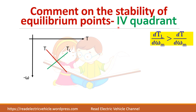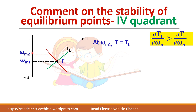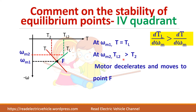In the fourth quadrant, at operating point F where T equals TL at omega-m1, increase the speed toward zero (upward direction). At omega-m2, TL2 is greater than T2. Always check the signs carefully in non-first-quadrant cases. Load torque greater means the motor decelerates, moving downward back toward the equilibrium point. Therefore, point F in the fourth quadrant is stable.